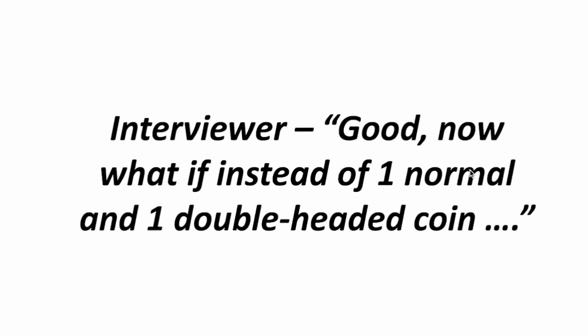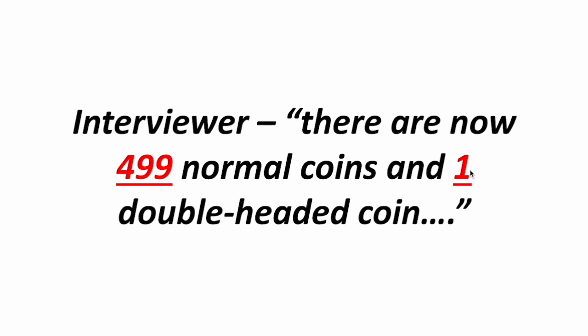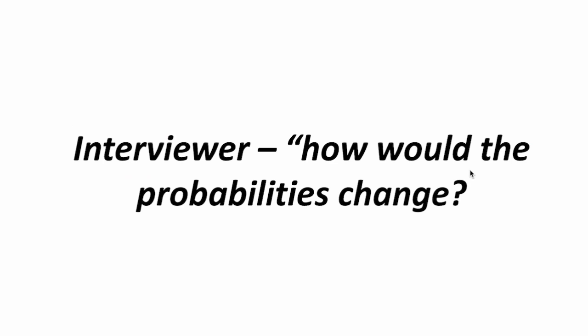The interviewer then says: what if, instead of one normal coin and one double-headed coin, there are now 499 normal coins and one double-headed coin? How would the probabilities change? To answer that question, click the video on the right.